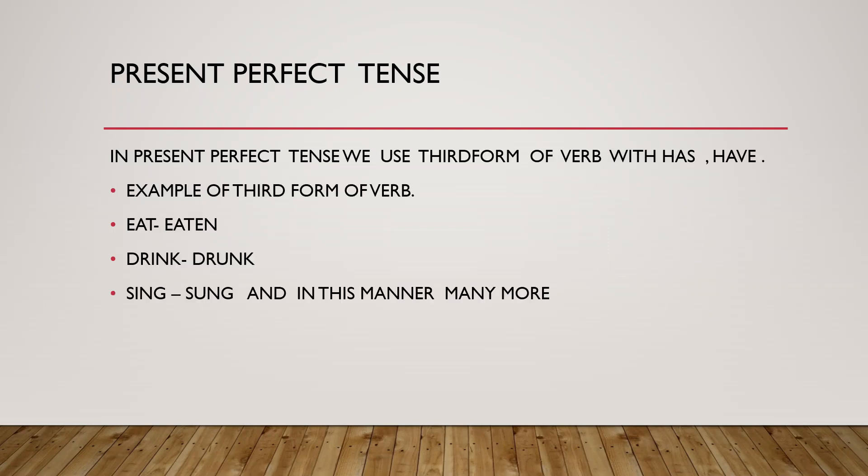In present perfect tense also, we use the third form of verb with has and have. Examples of third form of verb are: eat is eaten, drink is drunk, sing is sung, and in this manner many more.